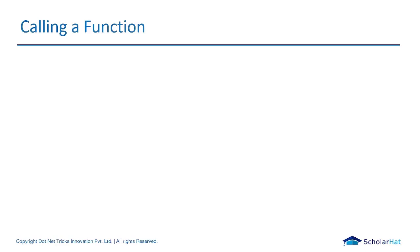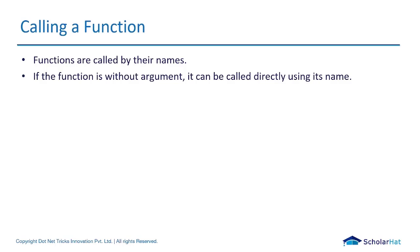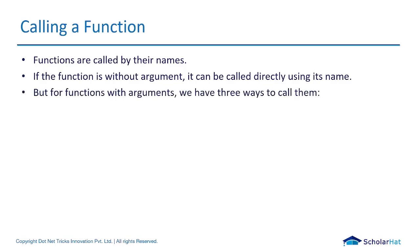Now we're going to learn about how to call a function. There are various types you can call a function. Functions are called by their names. If the function is without argument, it can be called directly using its name. But functions with arguments can be called in two ways: call by value or call by reference. We'll see call by value and call by reference one by one.